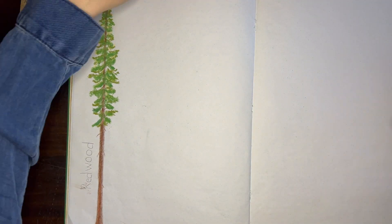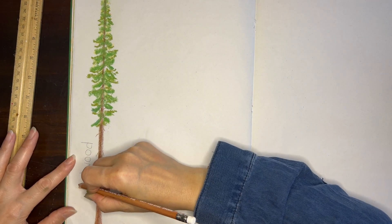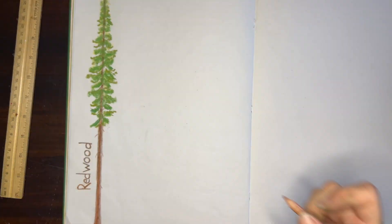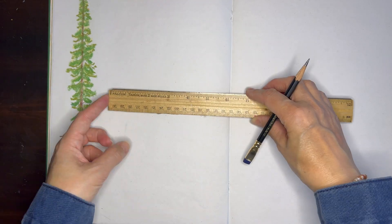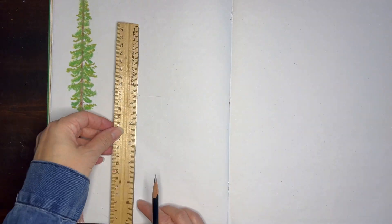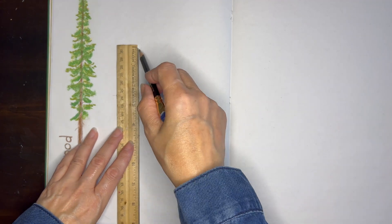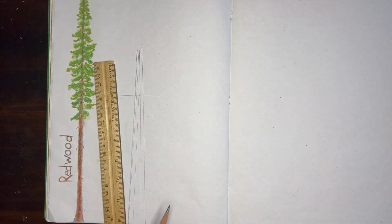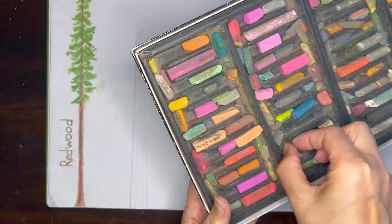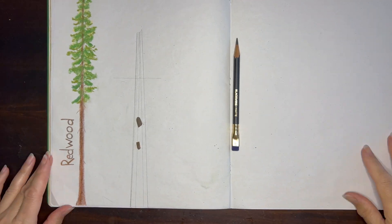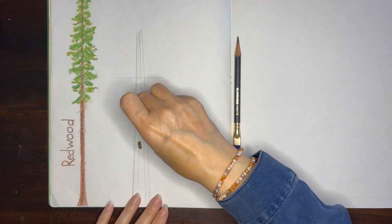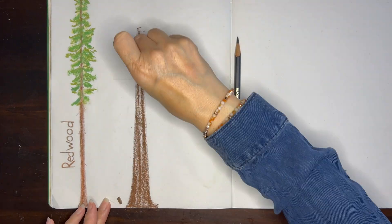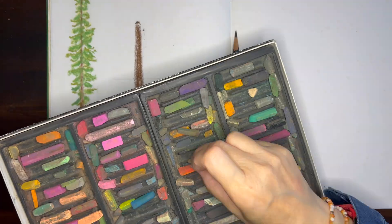I especially like these main lesson books because they have blank pages on both sides. There is an onion skin that divides the pages — I often take them out because a lot of our lessons are two-page spreads. But it's important to keep those onion skins to protect your pages, because your work will transfer onto your previous pages, especially if you're doing any handwriting with pencil. So it's important to keep those in while you're working ahead throughout the book.